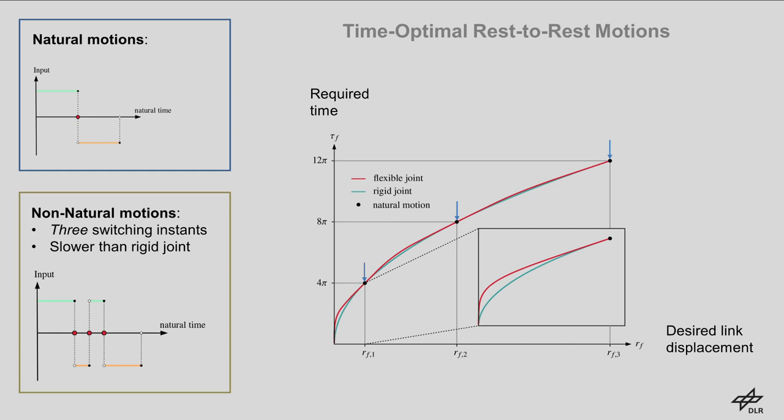Here we see a comparison of the time-optimal rest-to-rest motions for an elastic joint and its rigid counterpart, that is, when the joint stiffness approaches infinity. The plots show the natural time that is required for a given desired center of mass displacement, for the elastic joint in red and for the rigid joint in blue. One can immediately see, for all but the natural motion cases indicated by blue arrows, the minimum time needed for a rest-to-rest motion, realizing a desired displacement of the center of mass is always larger in the elastic case in comparison to the rigid case.